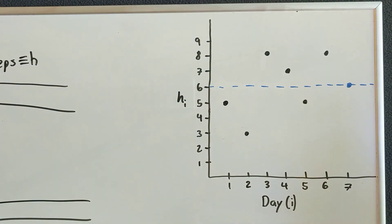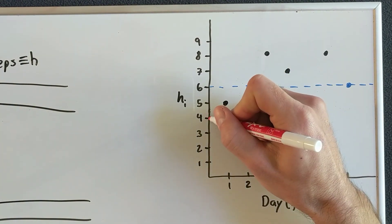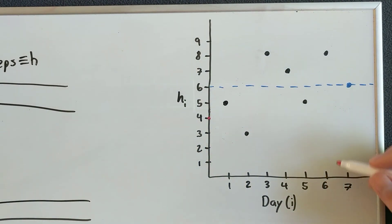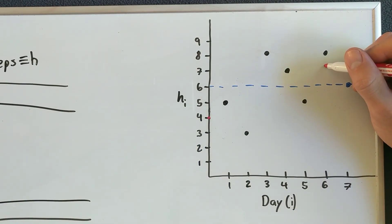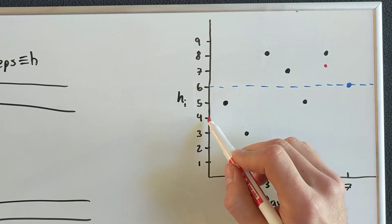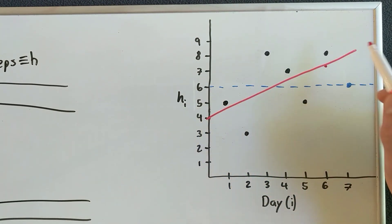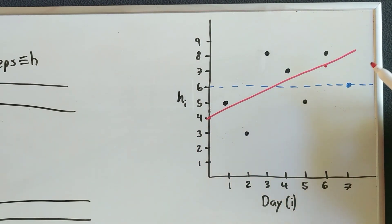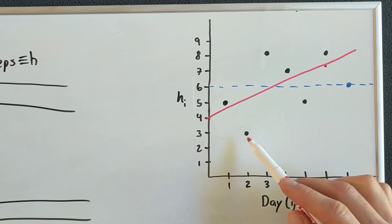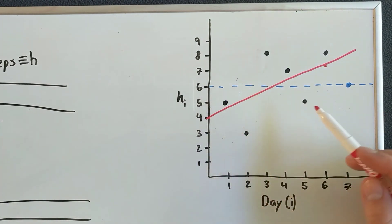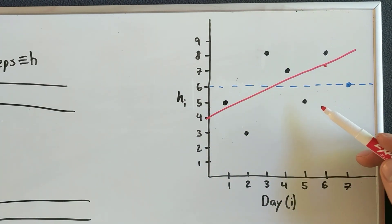I'm going to use red. So let's say it goes like this. Okay, this trend line looks pretty good. I guess we have two below and four above. I think it looks okay.